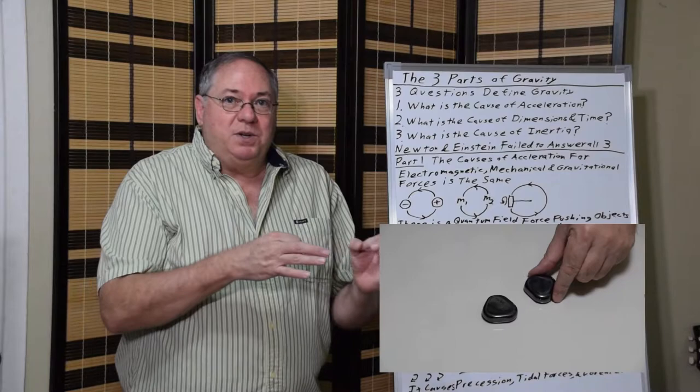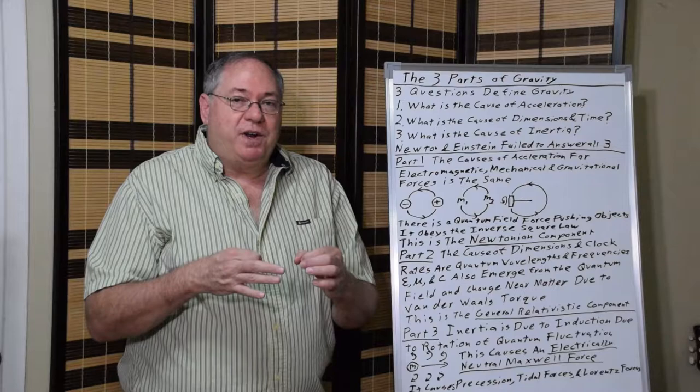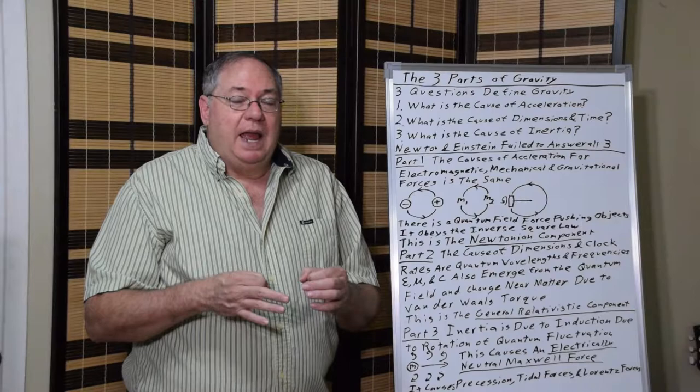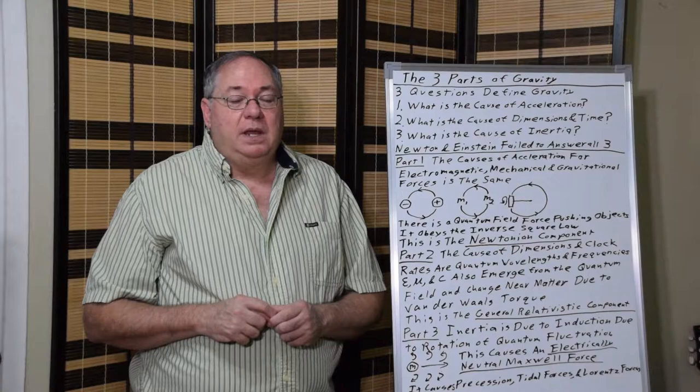If I push one magnet to push another magnet, these magnets are connected through the quantum field. There's some type of quantum field structure that we know from the Faraday field lines. There are field lines that cause a repulsive formation, and it's this quantum field structure that causes acceleration of bodies, electromagnetic and gravitational.